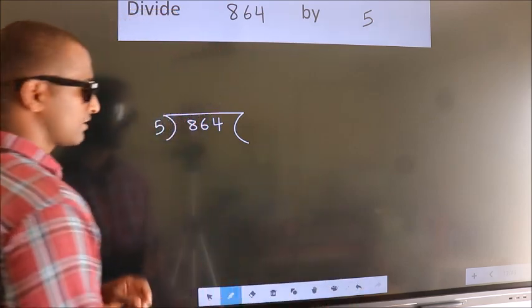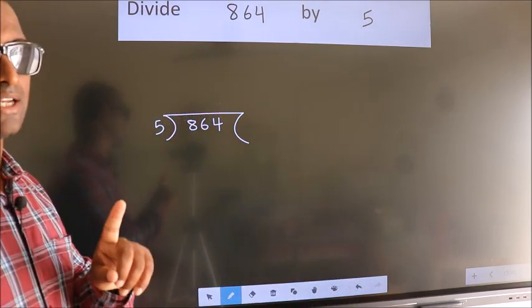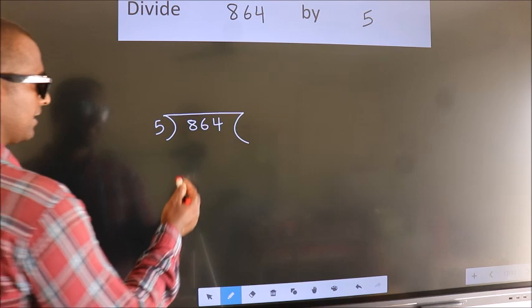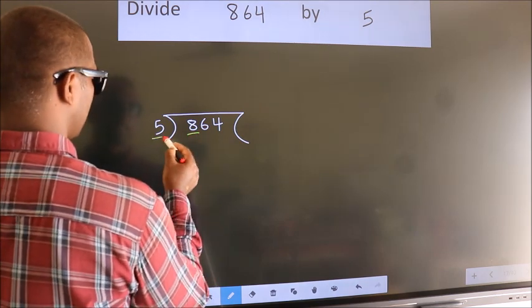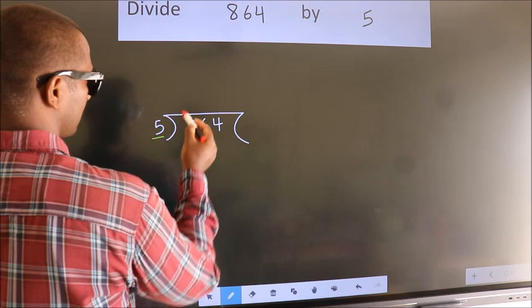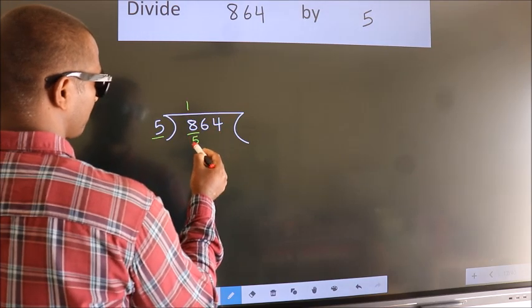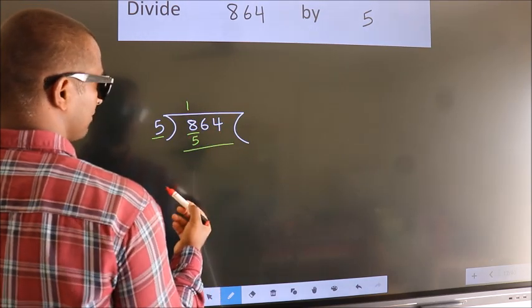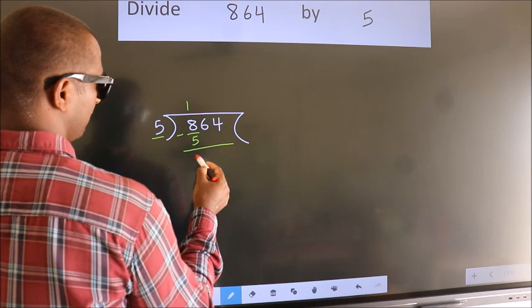This is your step 1. Next, here we have 8, here 5. A number close to 8 in 5 table is 5 once 5. Now, we should subtract. We get 3.